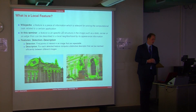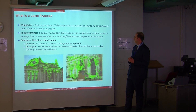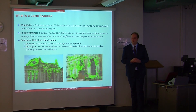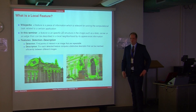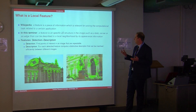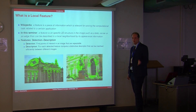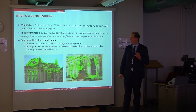First I start by trying to answer this question: what is a local feature? If we go to Wikipedia, a feature is a piece of information which is relevant for solving the computational task related to certain elements. That's very generic, so I prefer this definition: a feature is a specific 2D structure in the image — a corner or an edge that can be described in a local neighborhood by its appearance information.